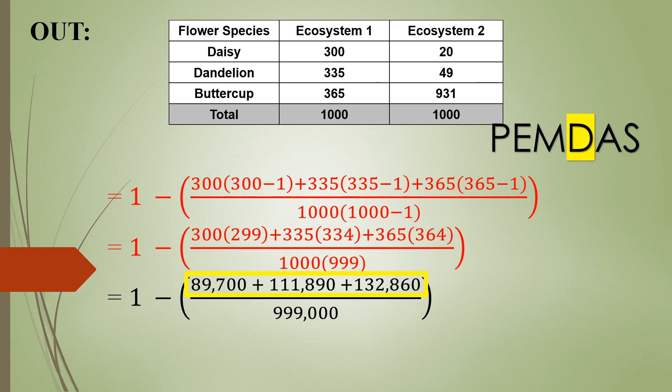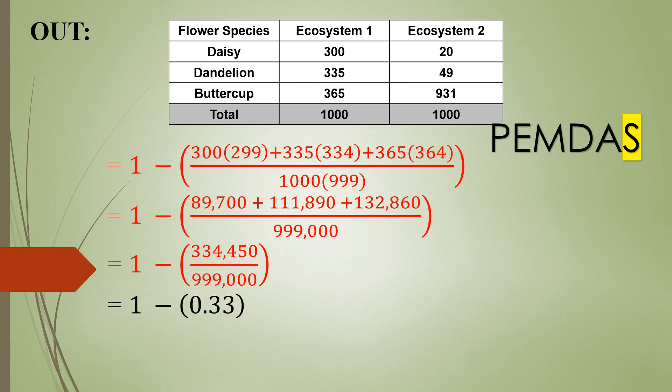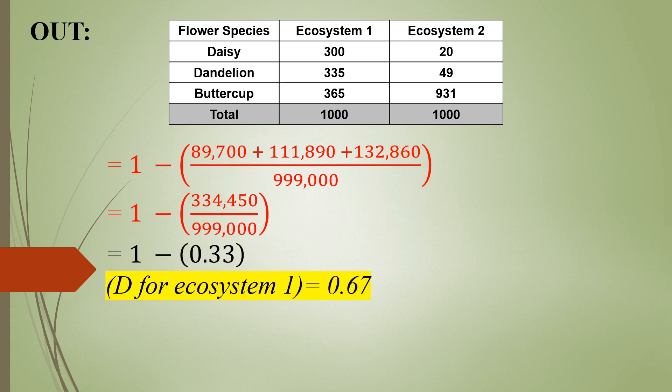We would like to divide, but before we can divide, we have to add the numbers that are on top of the equation. When we add those together, we get 334,450. Now we're ready to divide. When we divide those numbers inside the parentheses, we now have 0.33. Finally, we are able to subtract 0.33 from 1. This gives us 0.67. This is our answer for the Simpson's Diversity Index for Ecosystem 1.